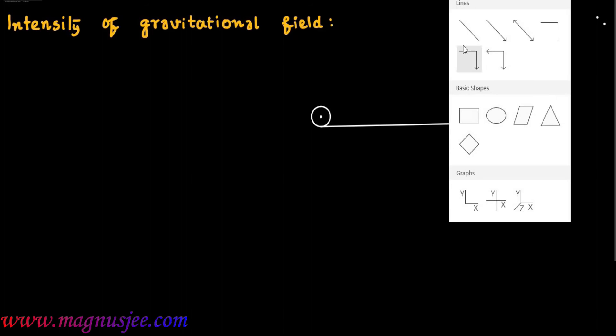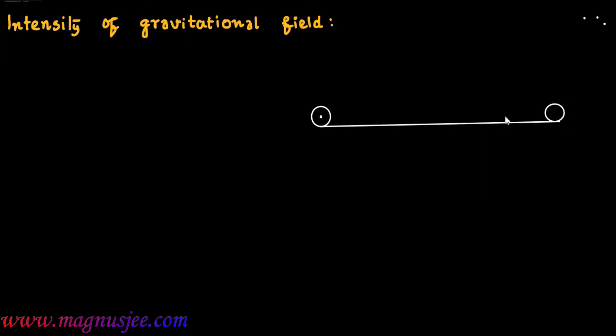Intensity of gravitational field. In the diagram, a given body of mass capital M is situated at point O, and at point A we have a test body of unit mass. The test body has mass M' which is equal to 1.